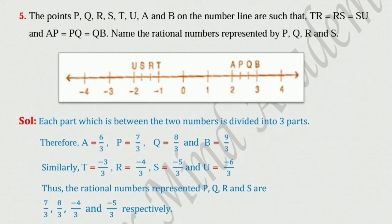P is equal to 7 upon 3. Why 7 upon 3? A is equal to 6 upon 3 and P is the next point, so P is equal to 7 upon 3. Q is equal to 8 upon 3 — add 1 upon 3 to P, that is 7 plus 1 upon 3, that is 8 upon 3. And B is equal to 9 upon 3. If you simplify 9 upon 3 we get 3, and it is given in the figure that B has the coordinate 3.